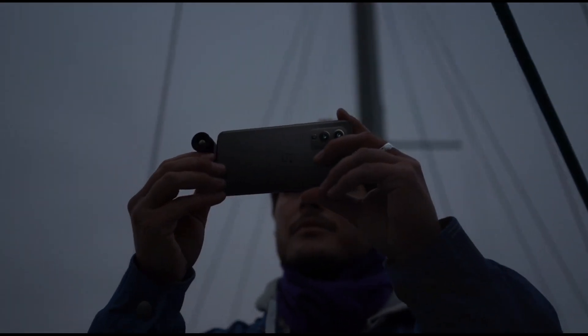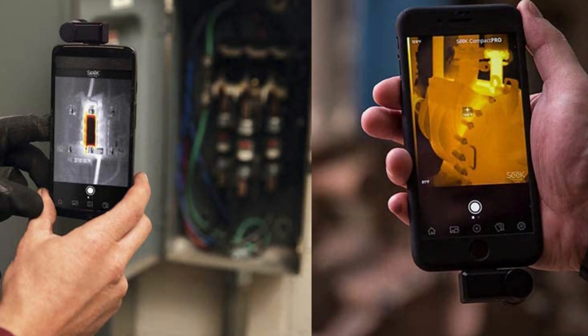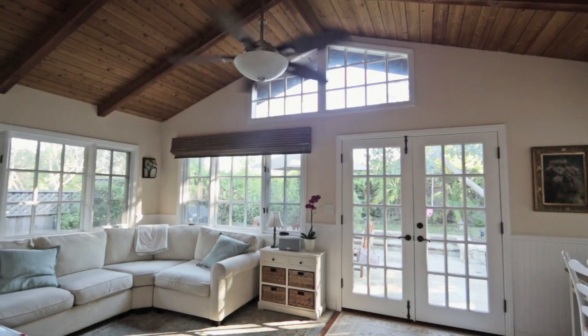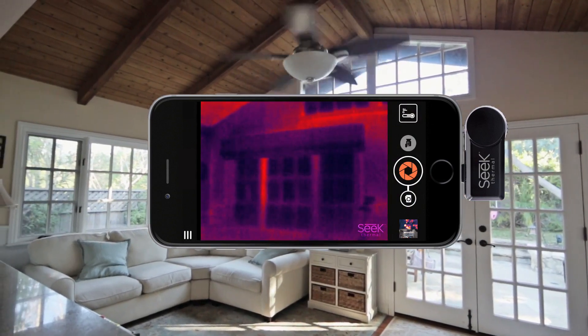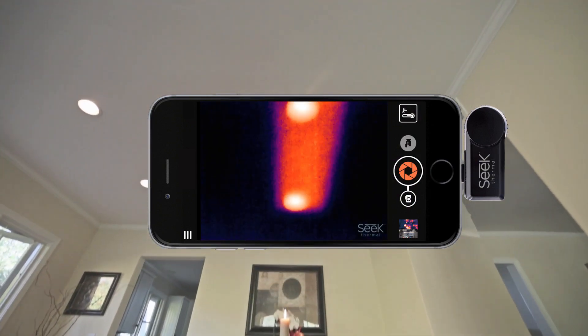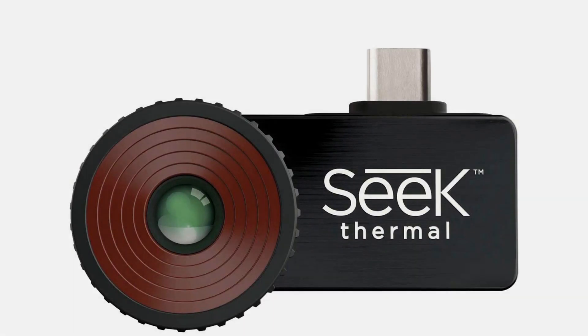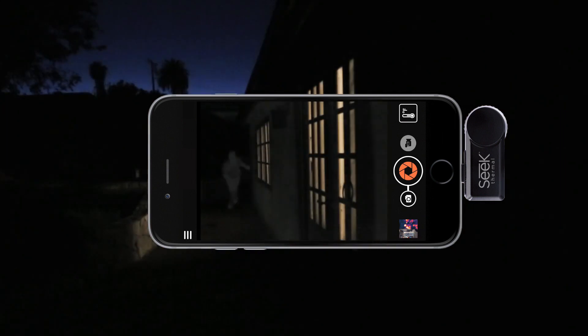Temperature range: The thermal imaging camera from Seek can detect temperatures from minus 40°F to 626°F. Android compatibility: It uses micro USB or USB-C depending on what you need and is compatible with most Android devices running Android 4.3 or higher OS.